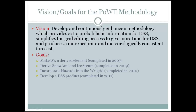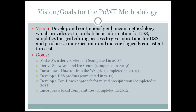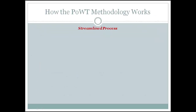A more advanced idea was developing a top-down approach for mixed precipitation and inserting it into the methodology, which we'll cover later. Last year road temperatures and their impact on precipitation types were incorporated, since those can cause havoc with precipitation types — whether or not you get ice on roads. Something still in development is incorporating severe weather probabilities into the weather grid, though that may take a while since we're now on AWIPS 2 in La Crosse.